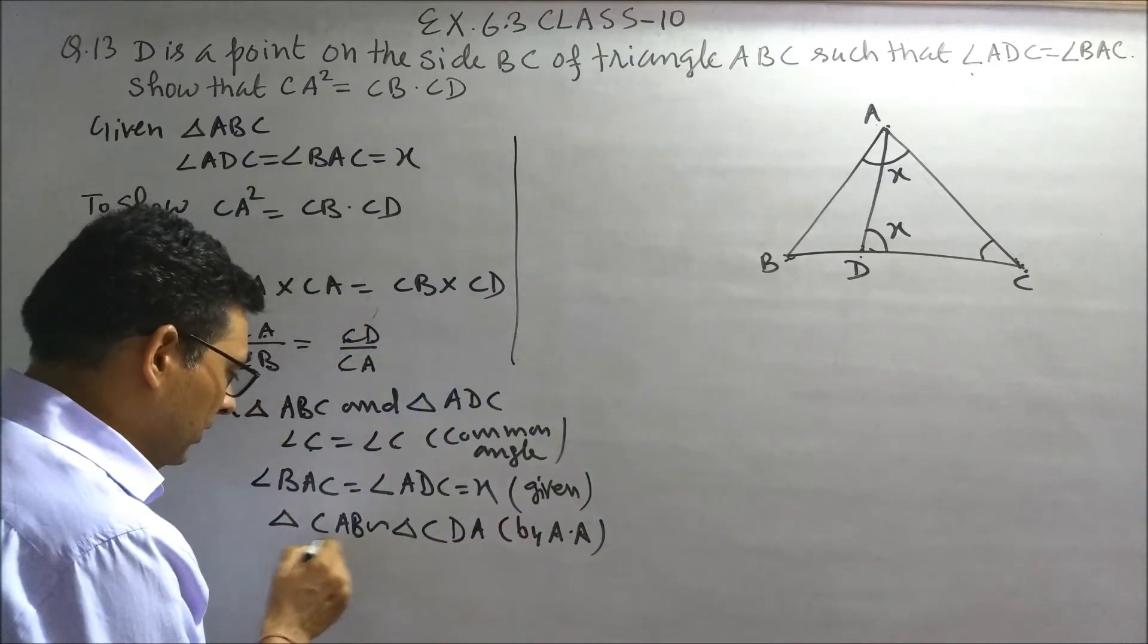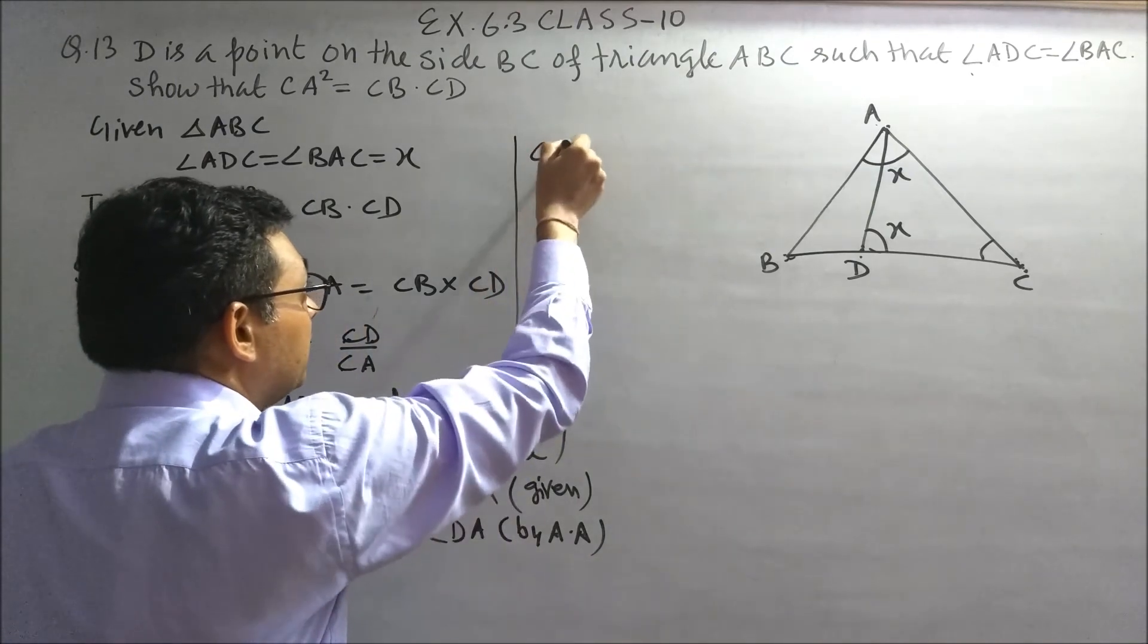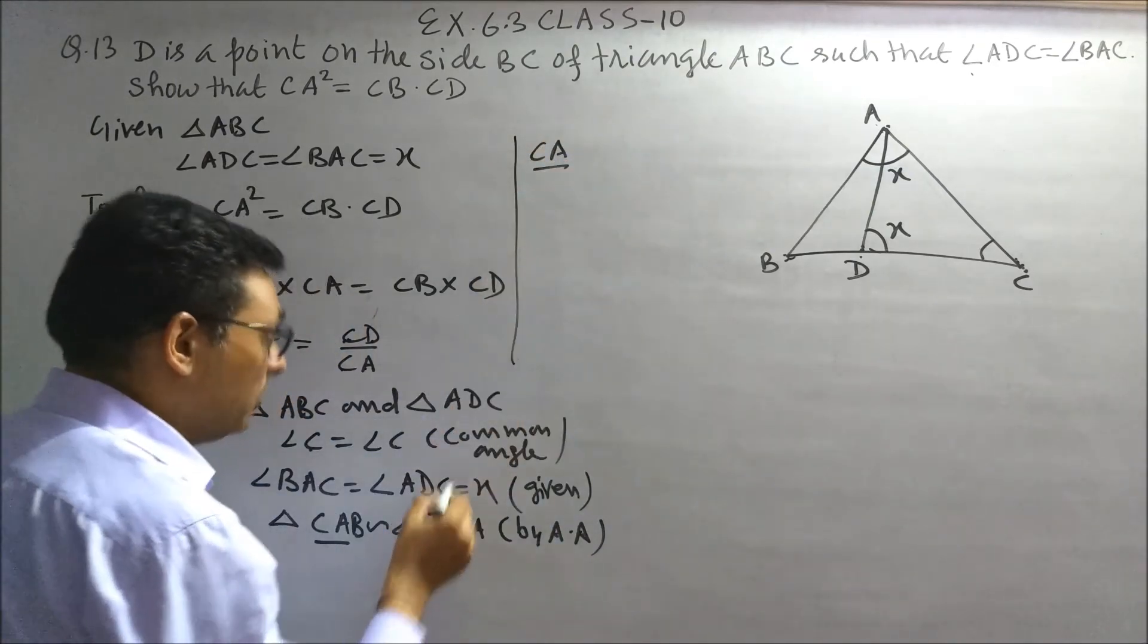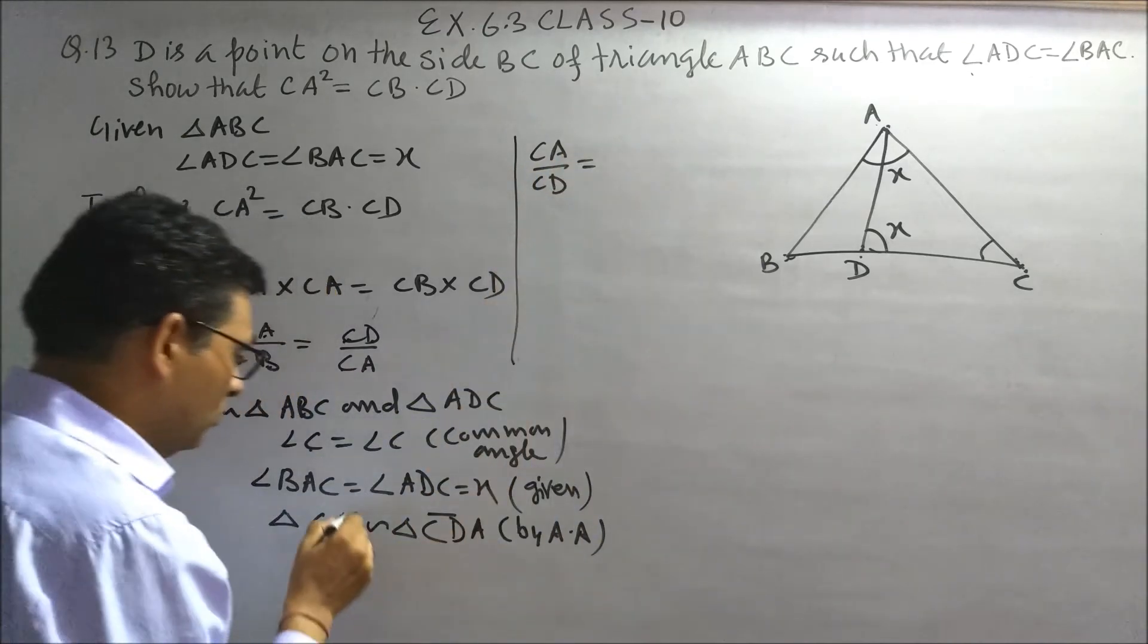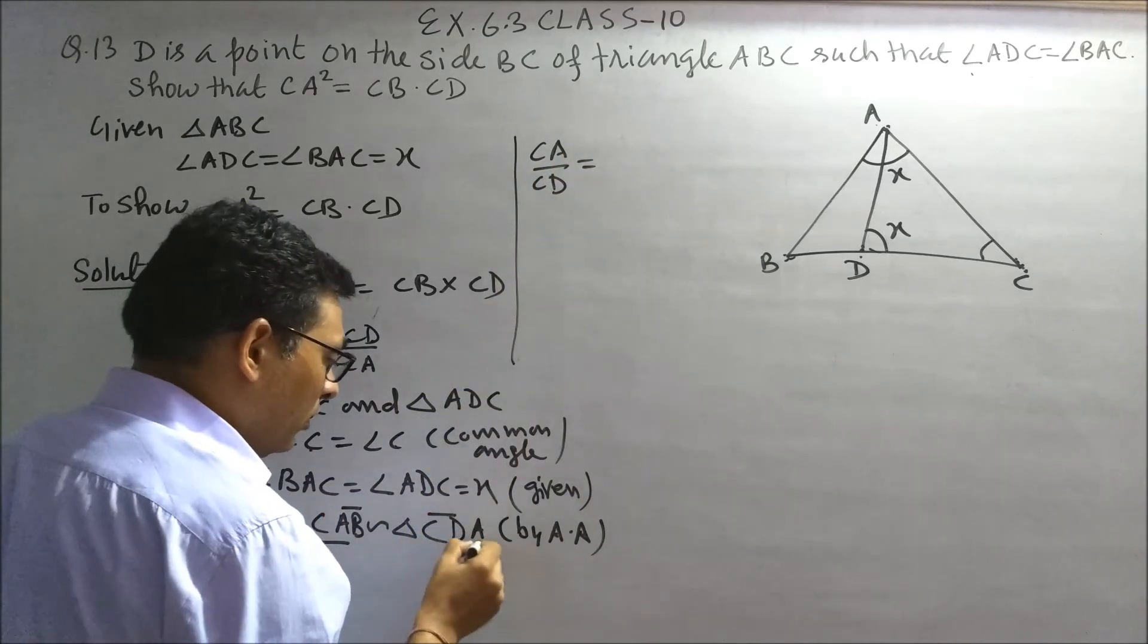Let's write those. AC upon CD is equals to AB upon AD.